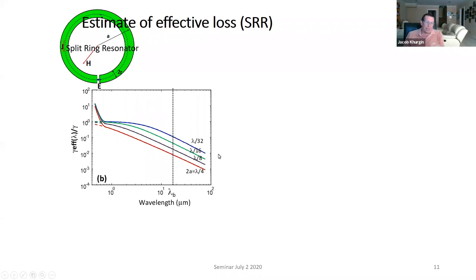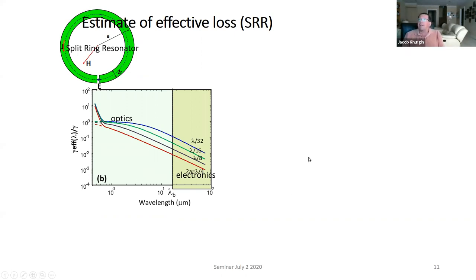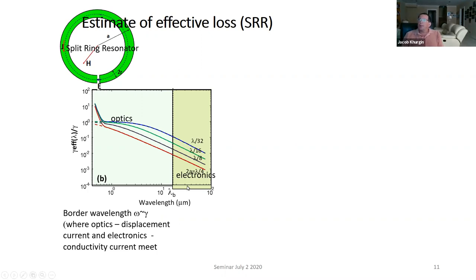That's important because here we're talking about mid-infrared. If you look at the boundary here, it's somewhere around 10 microns - this is basically a boundary between optics and electronics. The border wavelength is omega equal to gamma. So gamma is 10 femtoseconds, so that's about 10 microns. At 20 microns we're into electronics and conductor behavior.